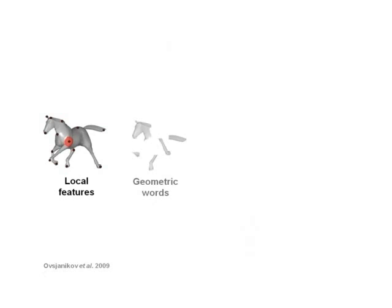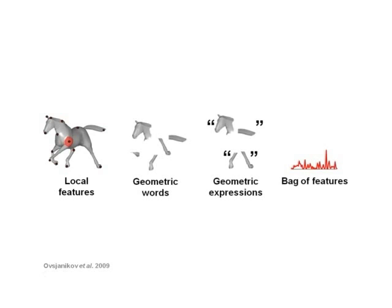Using local shape descriptors, a shape can be represented as a collection of geometric words. The distribution of such words, called a bag of features, can be used to compare shapes.